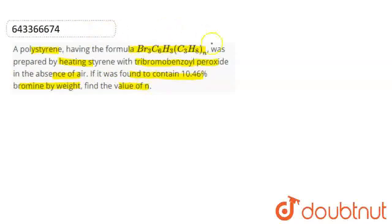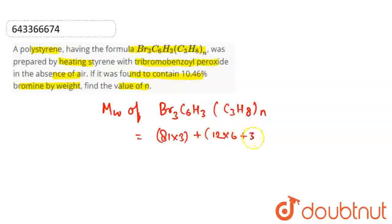So, if we look at this molecular weight, molecular weight of Br3, C6H3, C3H8N. So, this is the value of 81 into 3 plus C6H3, 12 into 6 plus hydrogen 3 plus C3H8.